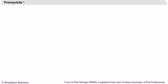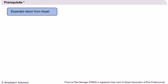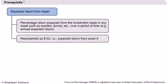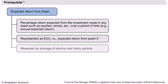Prerequisite: We invest our money in order to get some return. There are many assets in which we can invest — gold, stocks, bonds, or property. All these assets provide varying returns and have varying levels of risk associated with them. The expected return is the return that we can expect from the asset over a period of time. In general, it is measured from historical data by taking the average of past returns.